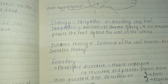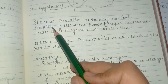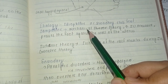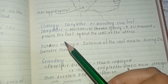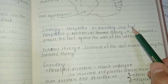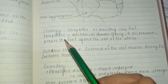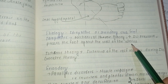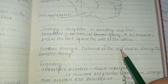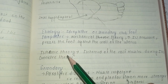The etiology of Congenital Talipes Equinovarus includes idiopathic and secondary causes. In idiopathic cases there are three theories: the mechanical theory, where increased intrauterine pressure presses the foot against the uterine wall causing deformity; the ischemic theory, where there is ischemia of the calf muscle during intrauterine life; and the genetic theory, which suggests a genetically related disturbance in foot development.